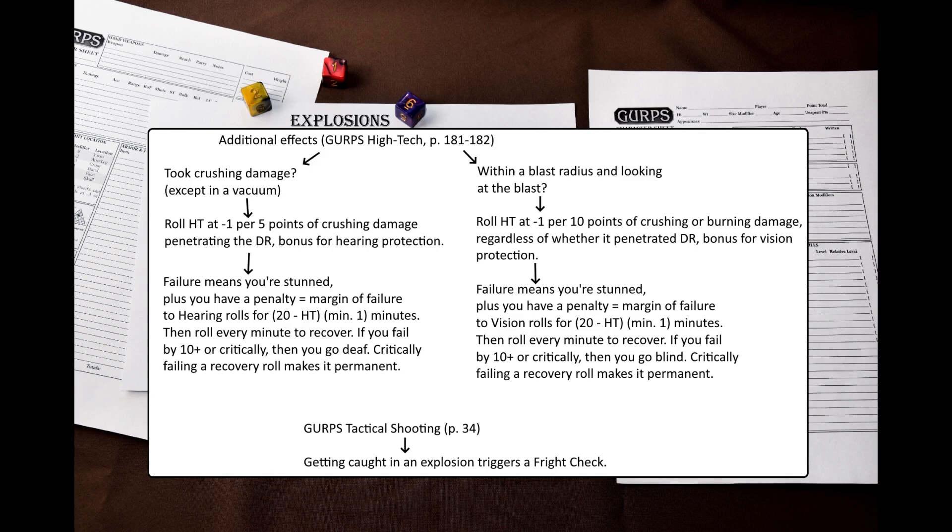Aside from the blast damage and fragmentation, there are some additional effects that are described on pages 181 and 182 of GURPS High-Tech. Except in a vacuum, if anyone takes crushing damage from an explosion, he must make an HT roll at minus 1 per 5 points of crushing damage penetrating the DR, and a bonus for earplugs, protected hearing, or similar countermeasures. Failure means that you are stunned and have a penalty to hearing rolls equal to your margin of failure for 20 minus HT minutes, with a minimum of 1 minute. If you fail by 10 or more, or fail critically, you go deaf. You can recover from it normally, but if you fail your recovery roll critically, then your hearing impairment becomes permanent. Protected hearing provides extremely good benefits here.